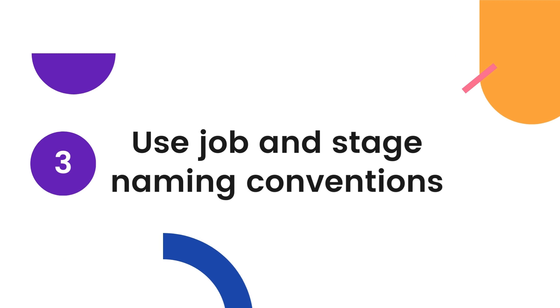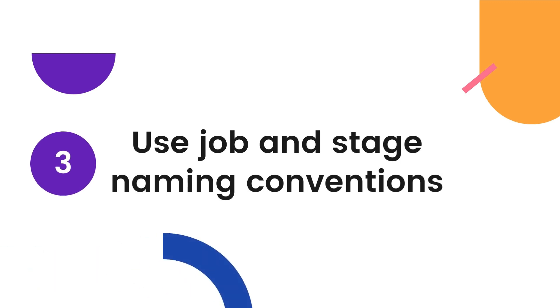Number 3: Use naming conventions for your jobs and stages to make it easier to understand the purpose and flow of the pipeline. For example, use names like build, test, and deploy for stages.